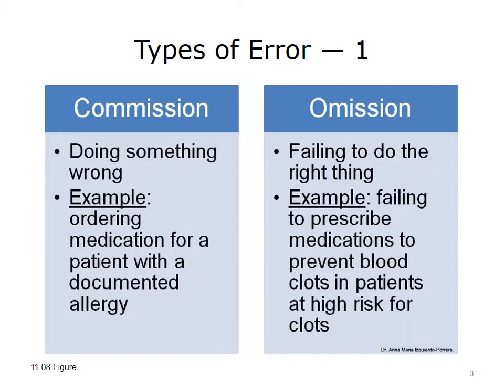There are a variety of ways to classify errors. This is one way used by AHRQ. Errors can be classified as acts of commission — doing something wrong — or acts of omission — failing to do the right thing. An example of commission is ordering a medication for a patient with a documented allergy to that medication. An example of omission is failing to prescribe medications to prevent blood clots in high-risk patients.